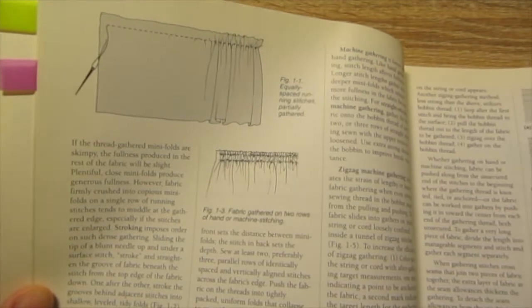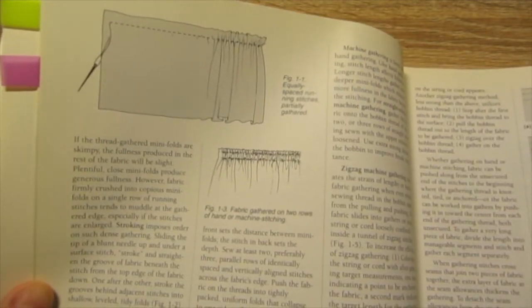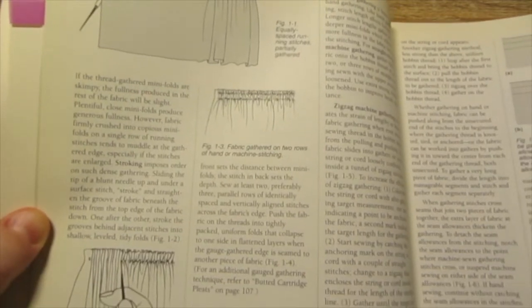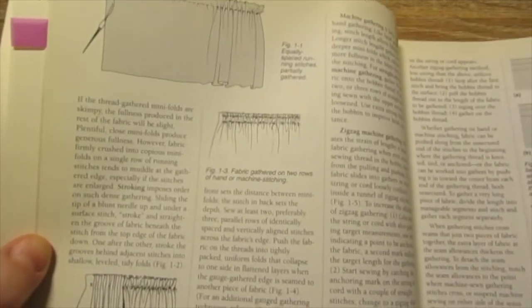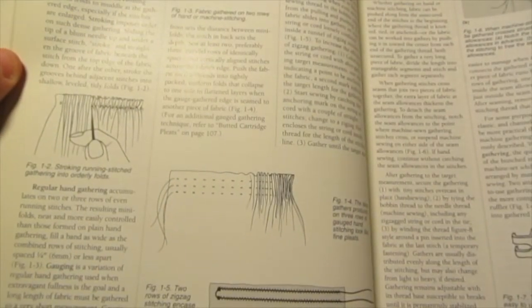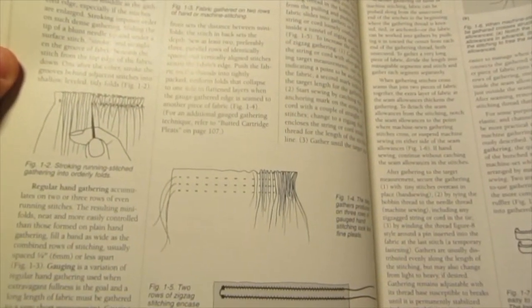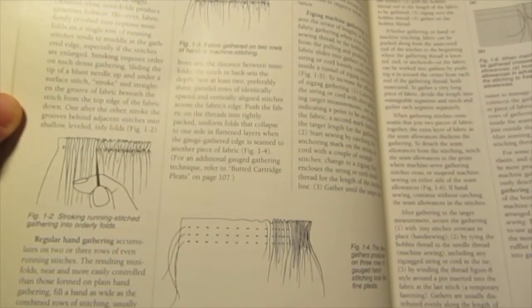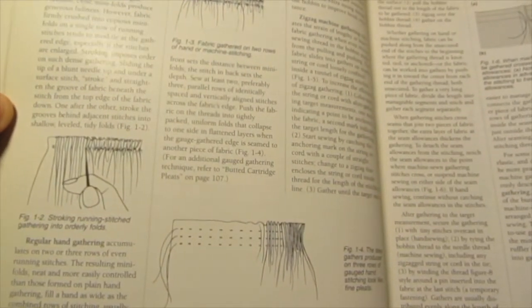The section on basics does include some really basic concepts for how to gather fabric, so it does start you off pretty easy. But it doesn't give a whole lot of descriptions for new sewers.